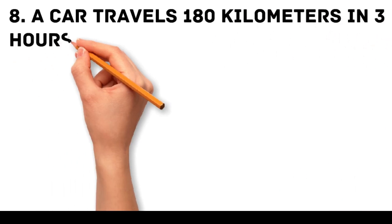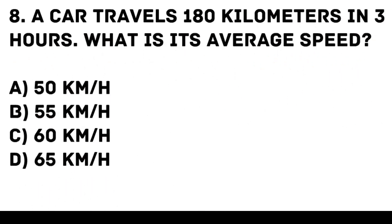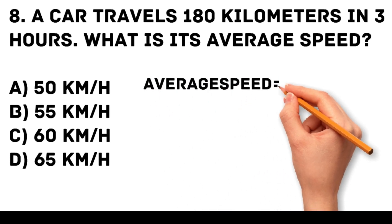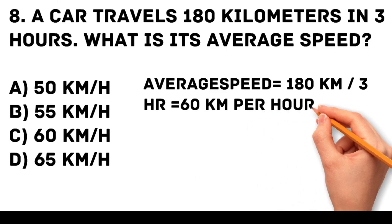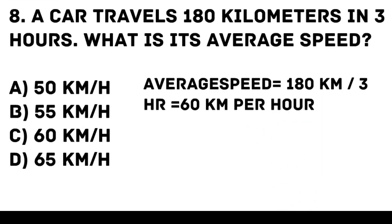Question 8. A car travels 180 kilometers in 3 hours. What is its average speed? A. 50 km/h. B. 55 km/h. C. 60 km/h. D. 65 km/h. Answer: C. 60 km/h. Average speed is the total distance divided by the total time. Average speed equals 180 km divided by 3 hours, equal to 60 kilometers per hour.